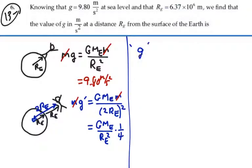So this g prime is actually equal to g times one-fourth, which would be 9.8 divided by 4, or 2.45 meters per second squared.